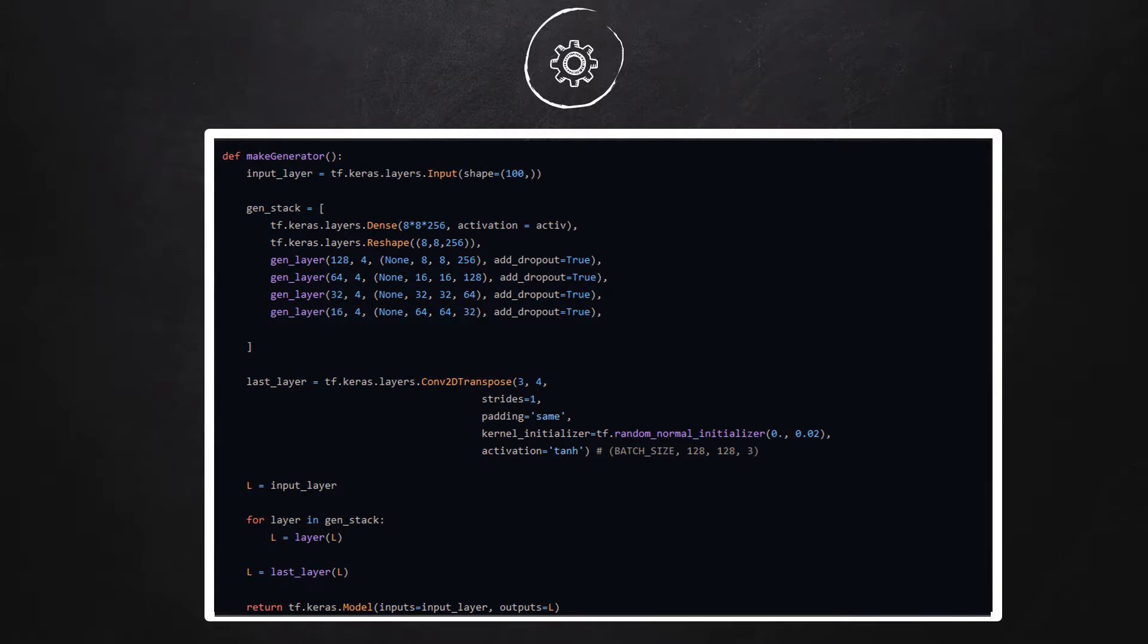We generate the complete network by this makeGenerator function. We first add an input layer for an input of a 100 dimensional vector. Then we add a layer stack in the form of a Python list. First item in the list is a dense layer of size 8 by 8 by 256. Then we add four custom layer blocks by adding the general layer function four times. After the layer block, we add a last inverse convolution layer with a tanh activation function. This is the layer which would generate the final generated image.